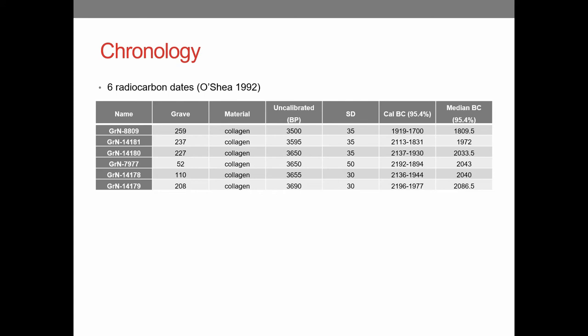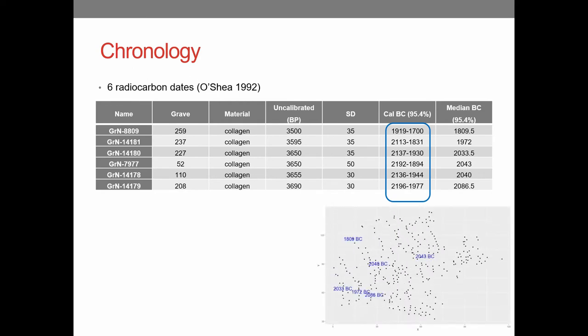So regarding chronology, besides the fact that previous research was done on this necropolis, there are only six radiocarbon dates for these 312 graves and here you can see where they are placed. The thing is that they overlap quite greatly and besides that they are located mainly in the western part of the necropolis.